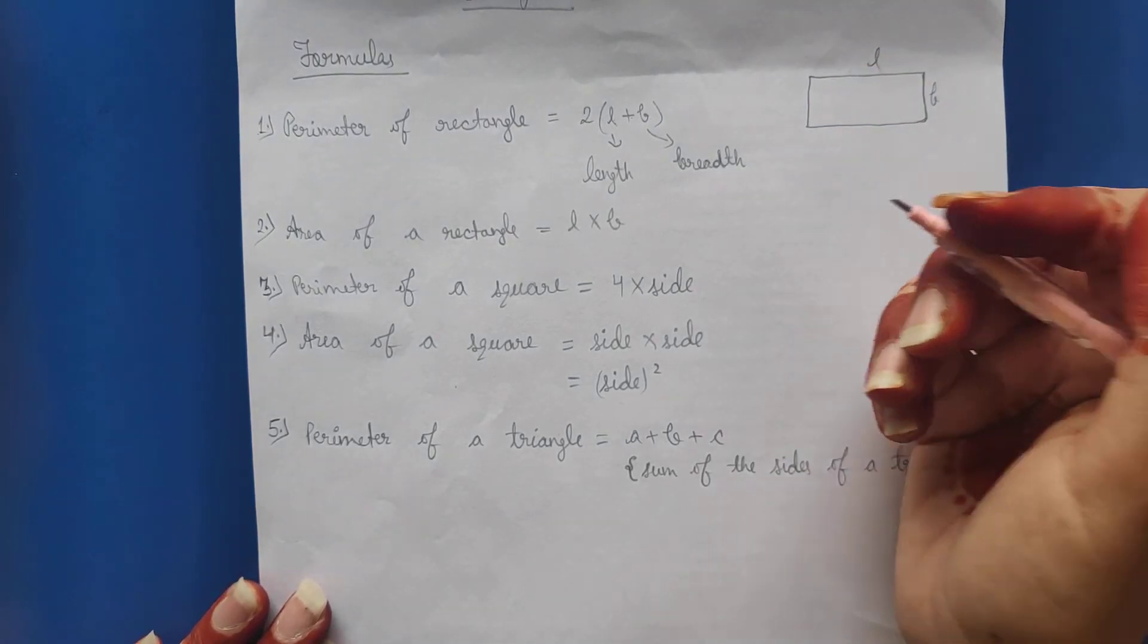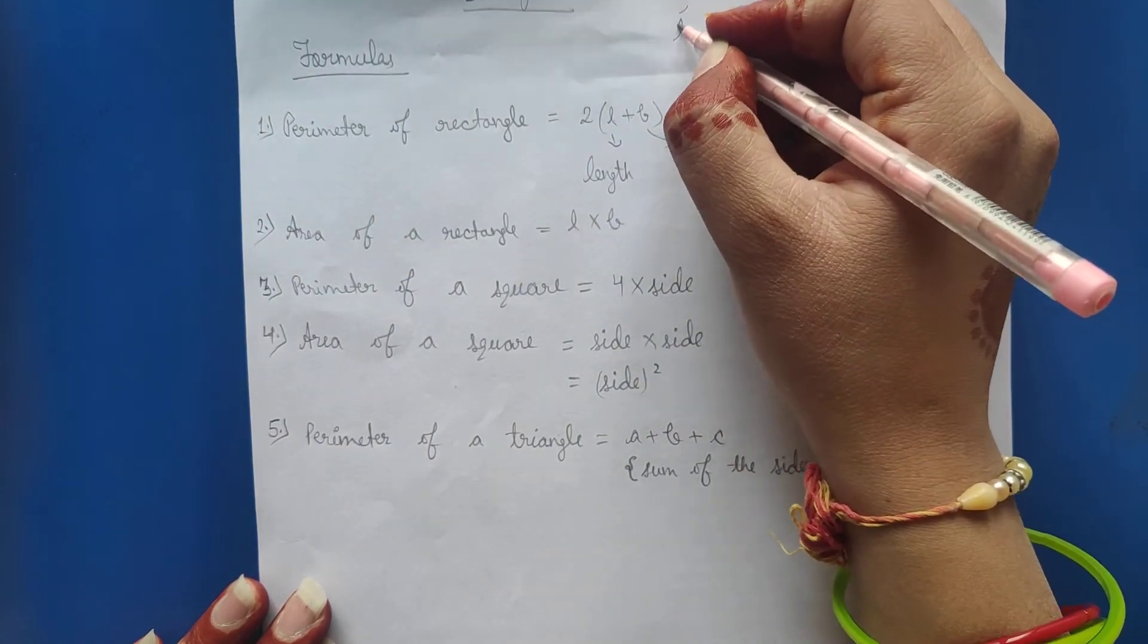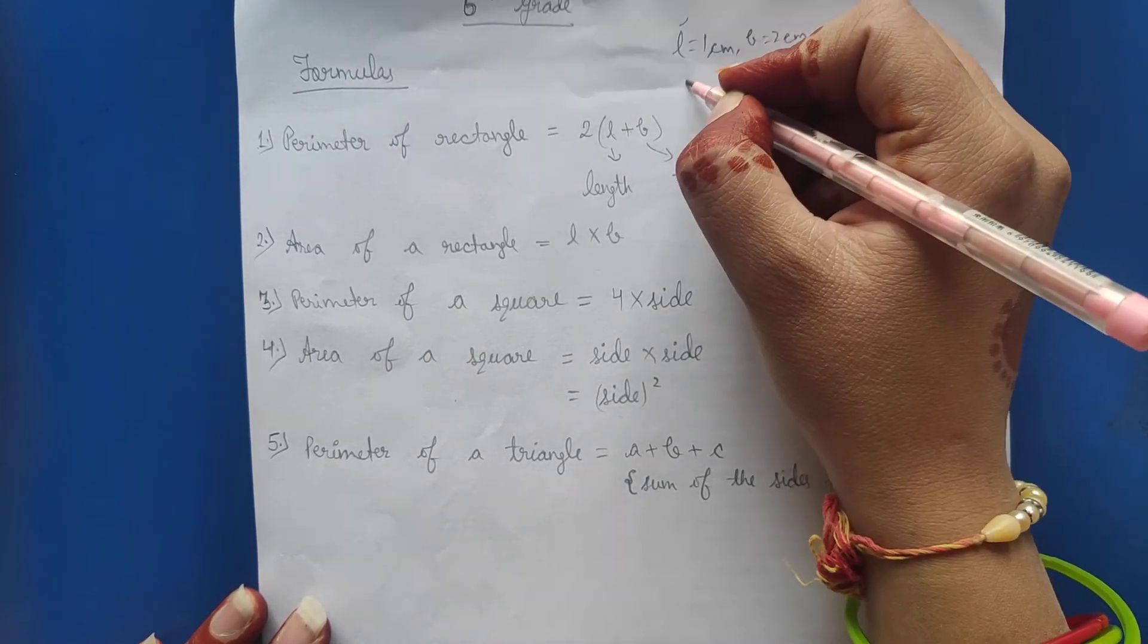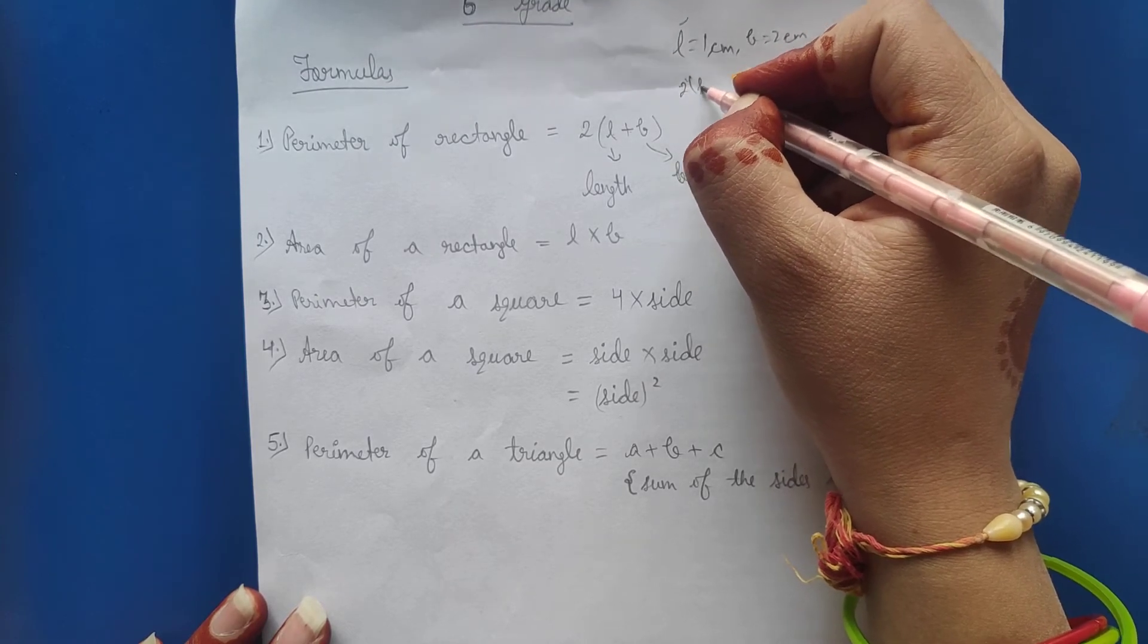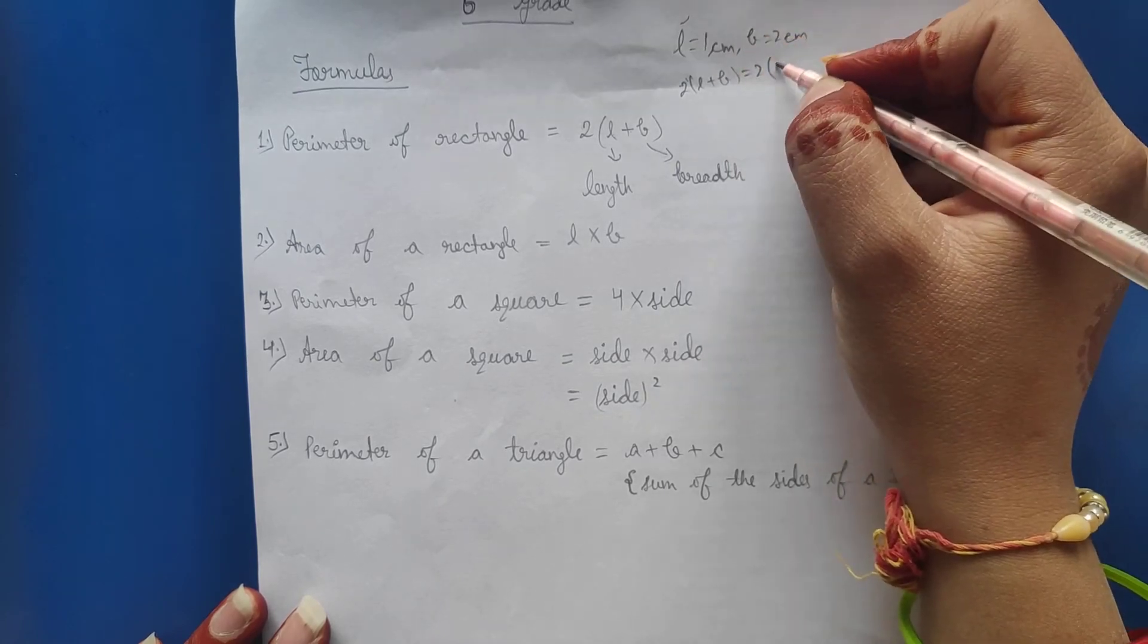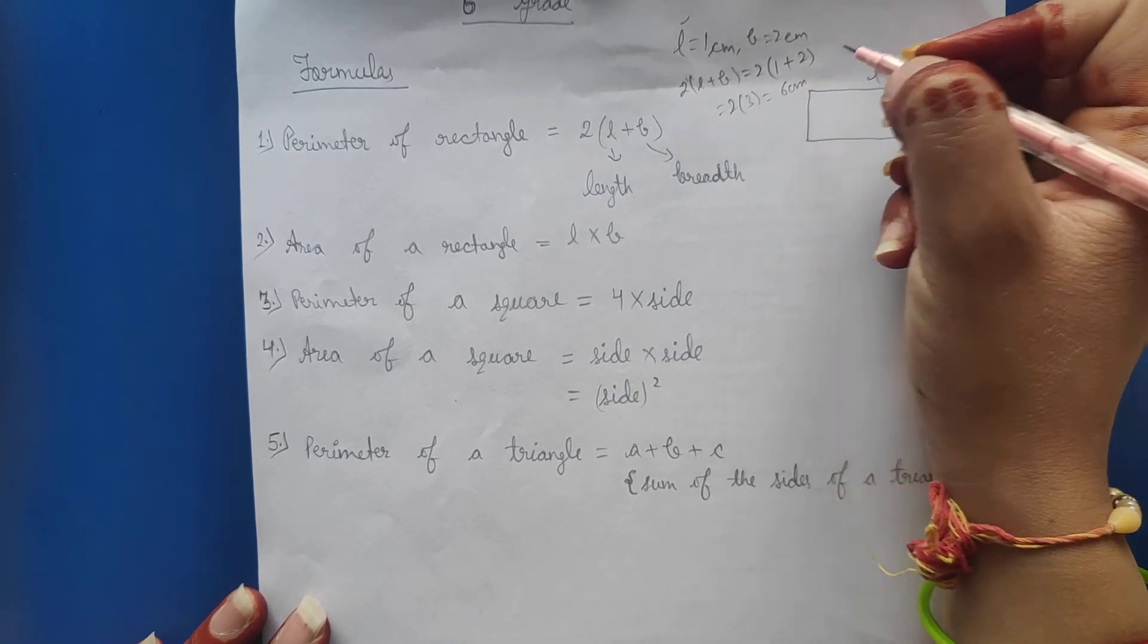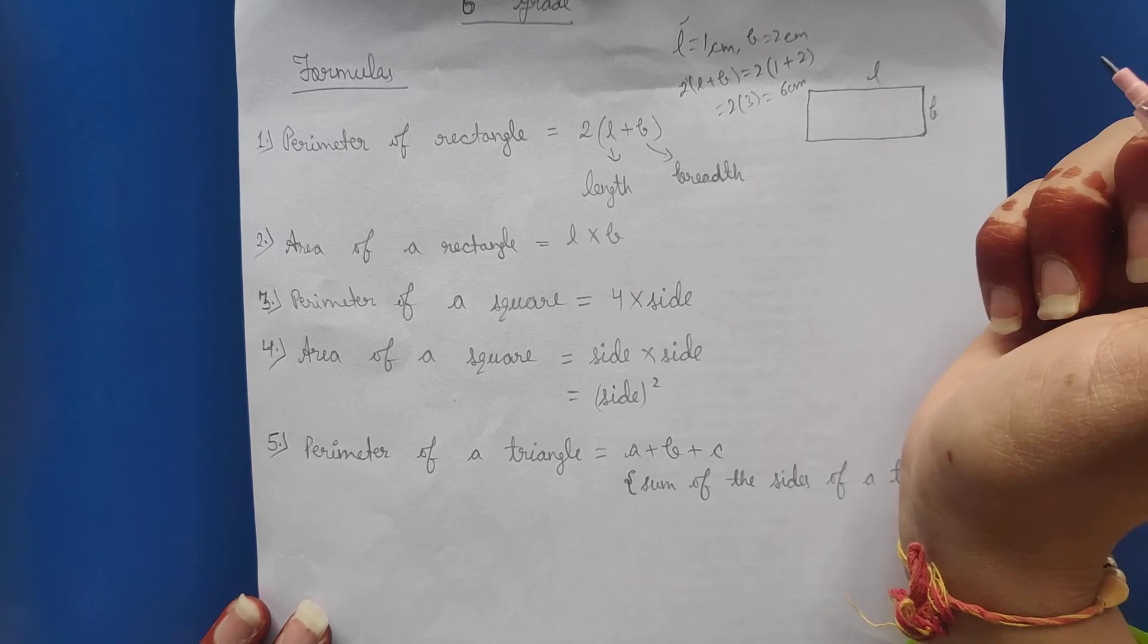Suppose the length given is 1 centimeter and breadth is 2 centimeter. So the perimeter will be 2 times length plus breadth, which is 2 into 1 plus 2, which becomes 2 into 3 equals 6 centimeter.